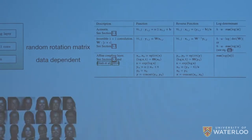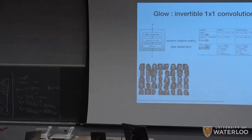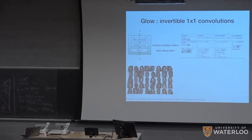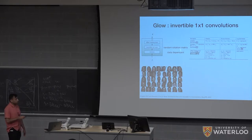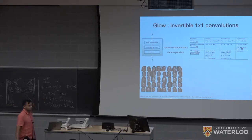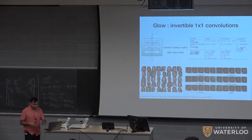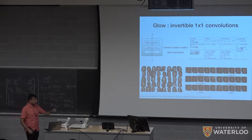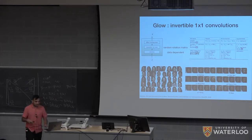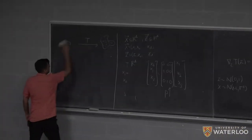Glow reported very sharp images, which was a revelation because conventional wisdom held that log-likelihood training couldn't produce sharp images — only blurry ones. Glow disproved this. They also demonstrated attribute manipulation: given a labeled dataset of faces marked as 'old' or 'not old,' they compute the average latent vector z_positive for old faces and z_negative for not-old faces.